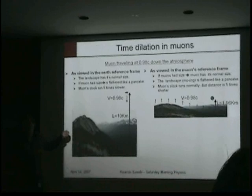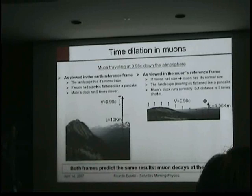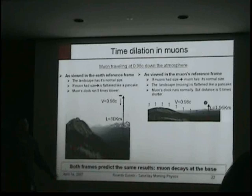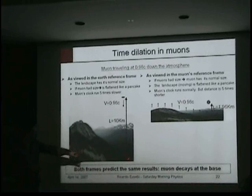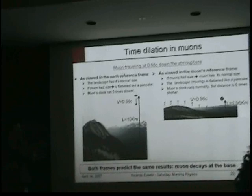In this frame, you would see the muon traveling more with a delayed clock. So it's still going to decay at the base of the mountain. And I think that's the most important thing. No matter how you see, no matter what frame you stand on, you can even be on a third frame, you're always going to create the same thing. The muons will be decaying at the base of the mountain.